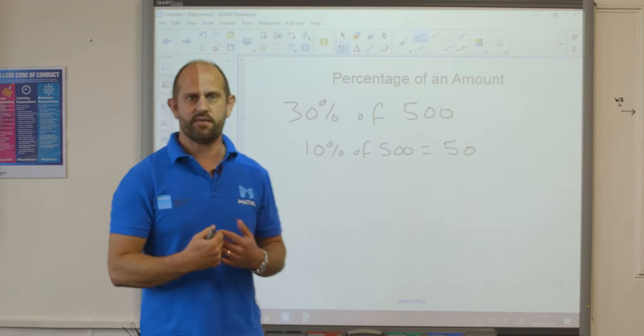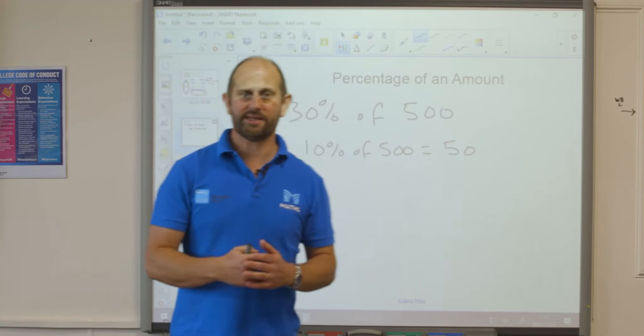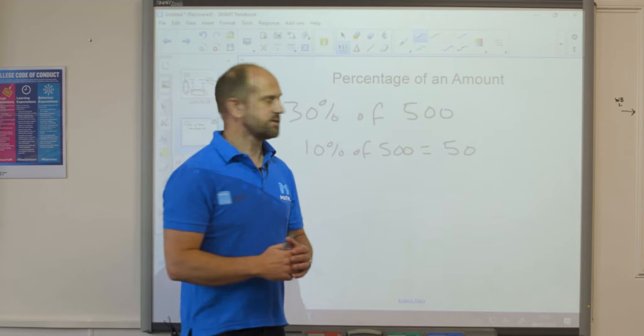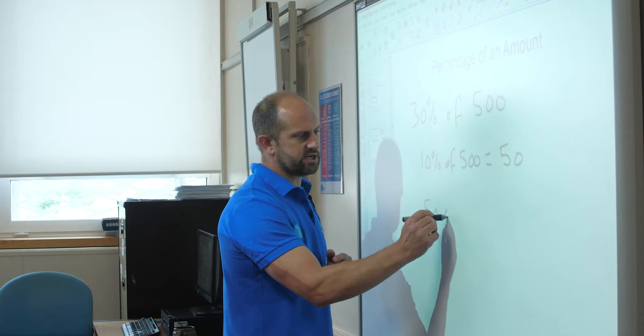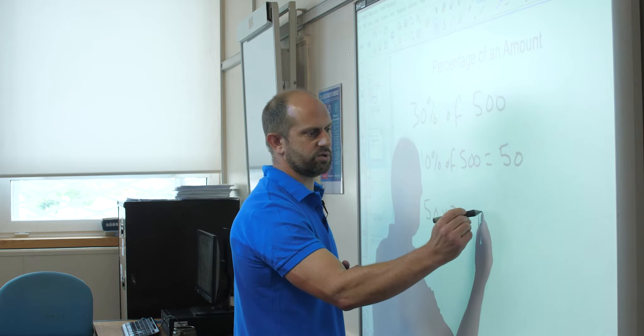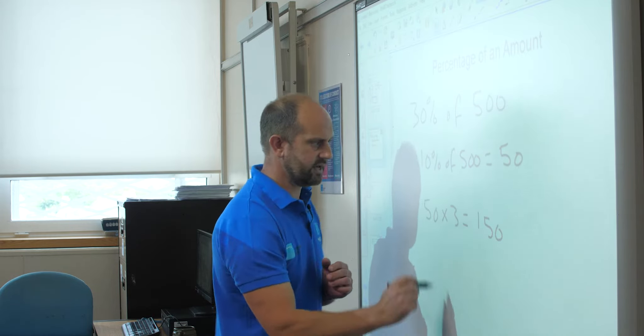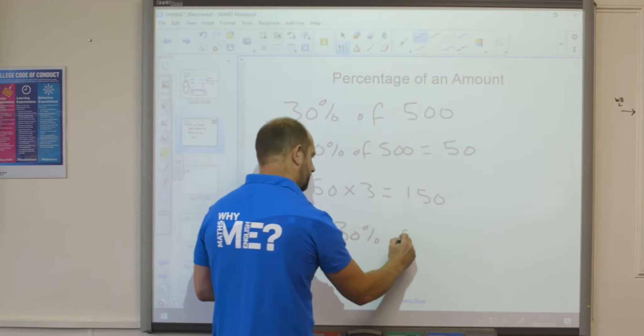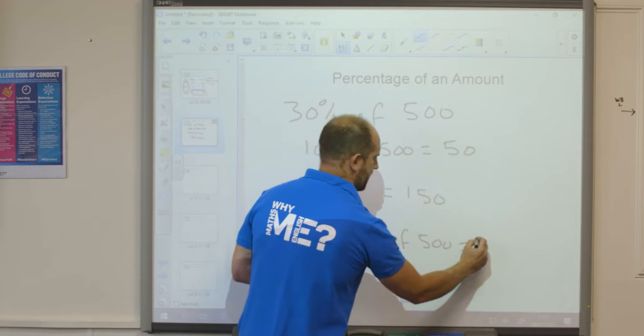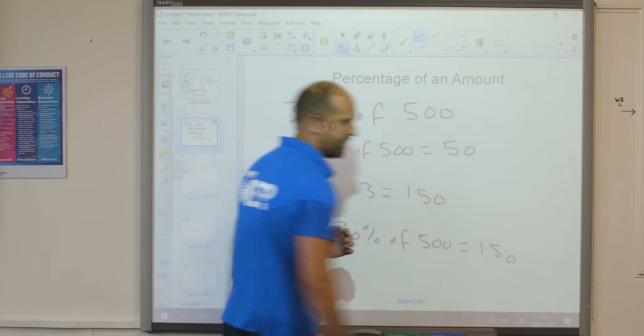So now I know that, I know that 30% is 3 times 10. So therefore if 10% is 50, 50 times by 3 equals 150. So therefore 30% of 500 equals 150.